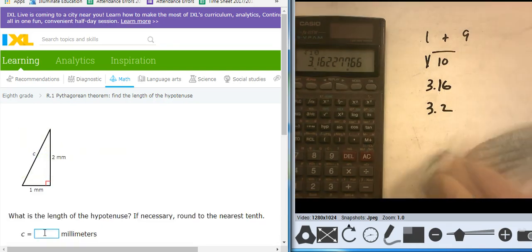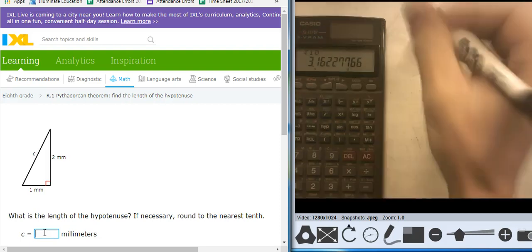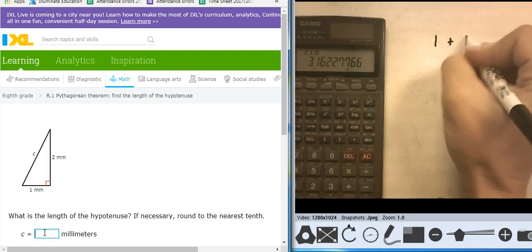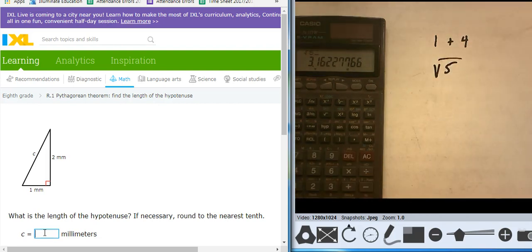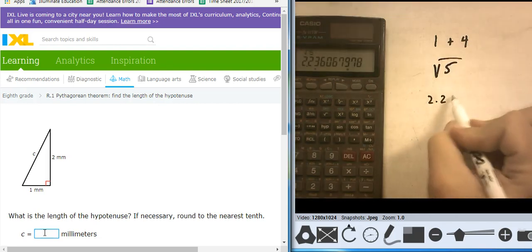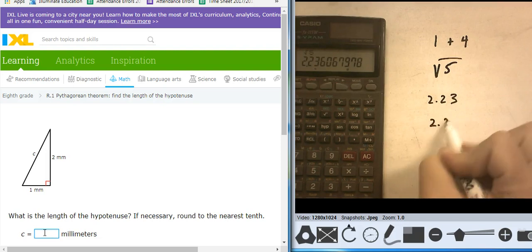Okay, one more rounding one, and then I'm done with this one. So, 1 squared is 1. 2 squared is 4. Adding them together. I get 5. Square root of 5 is 2.23. That's going to take me to 2.2.